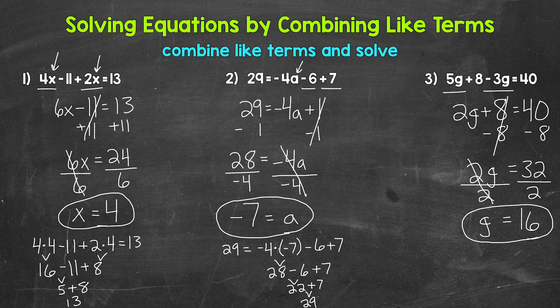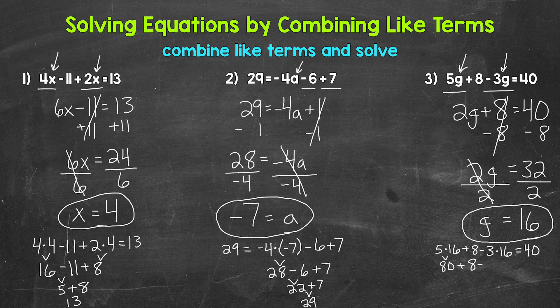32 divided by two gives us 16, so G equals 16. Let's check by plugging 16 in for G. Five times 16 plus eight minus three times 16 equals 40. Multiplying first: five times 16 is 80, three times 16 is 48. So 80 plus eight minus 48 — 80 plus eight is 88, and 88 minus 48 is 40. We are correct — G equals 16.